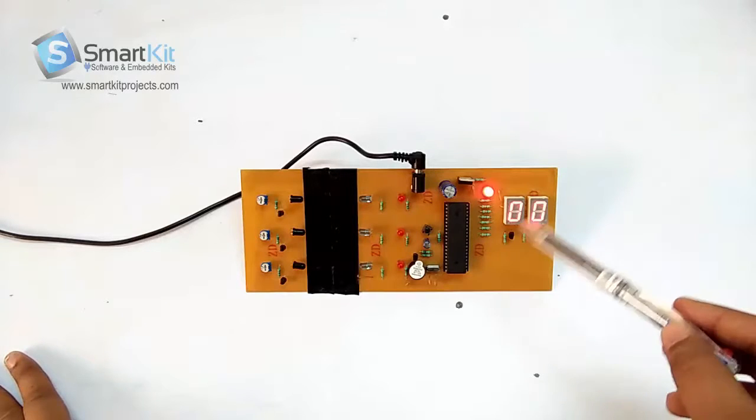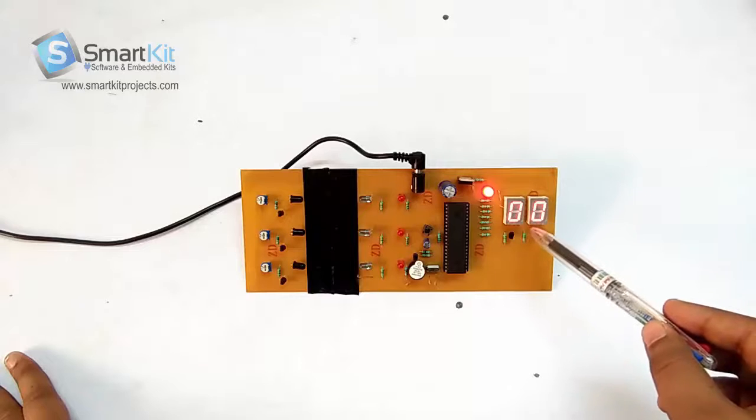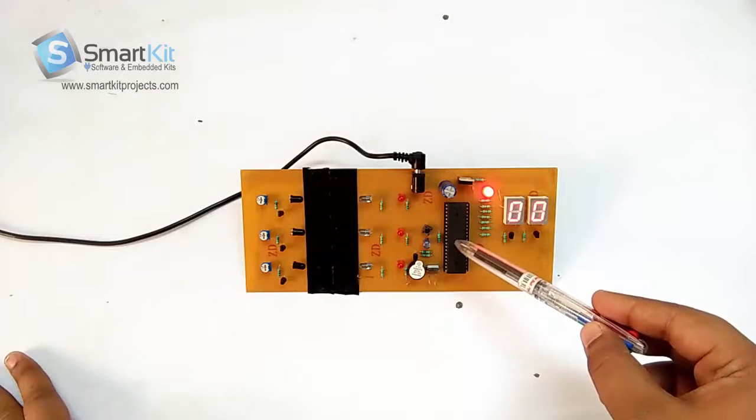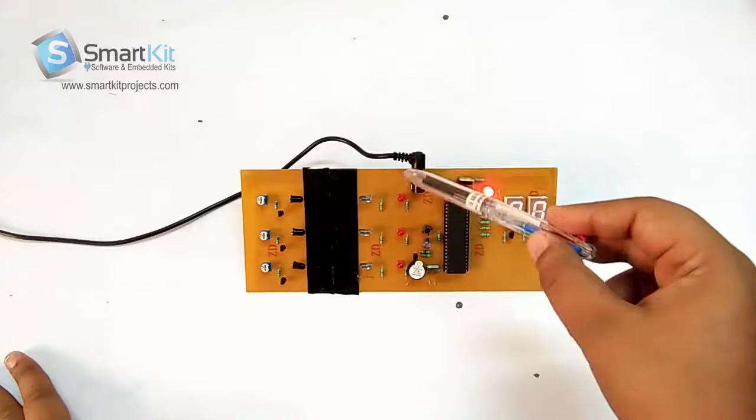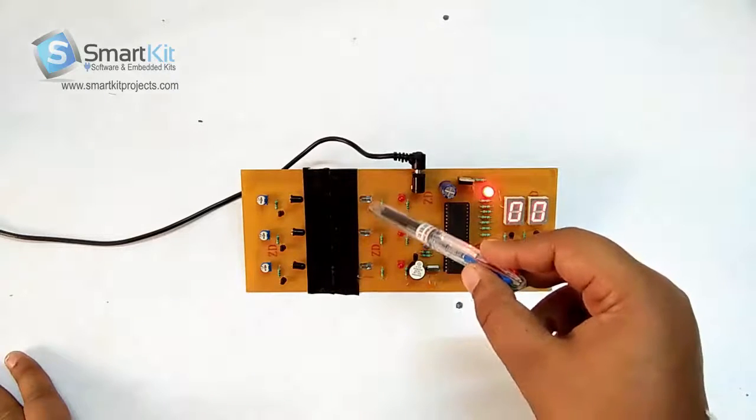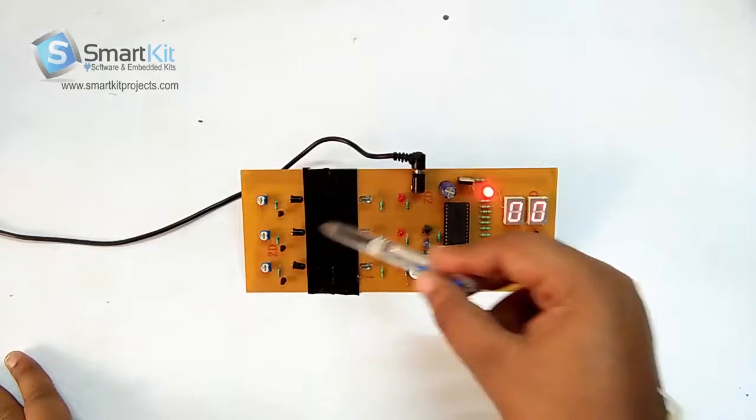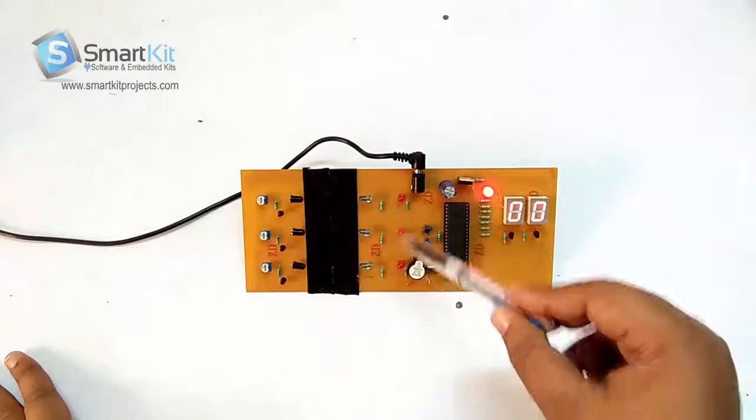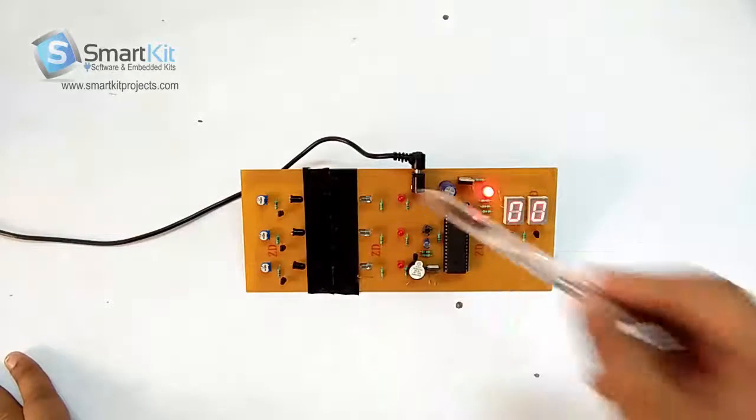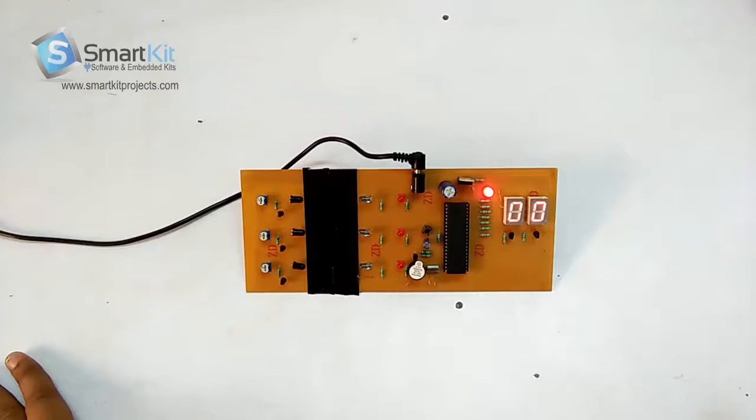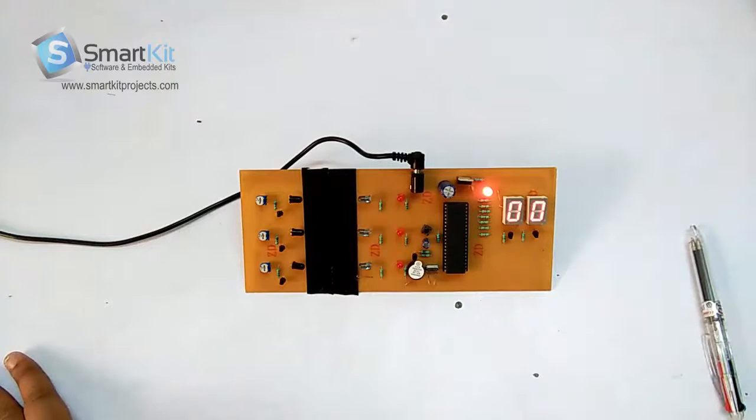So let's start. This is a seven segment display, this is 8051 microcontroller, power supply, this is IR sender and this is IR receiver over here. This is LED and a power supply.